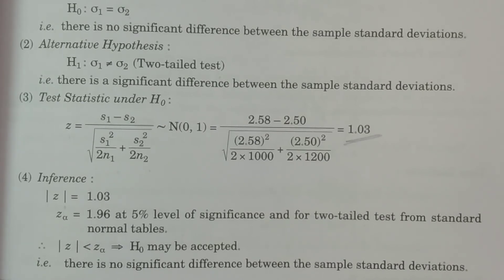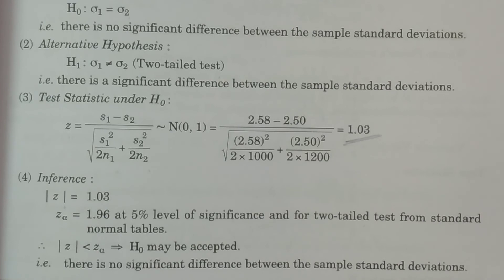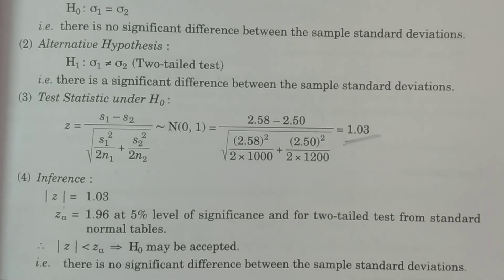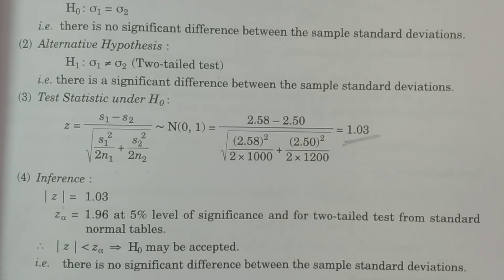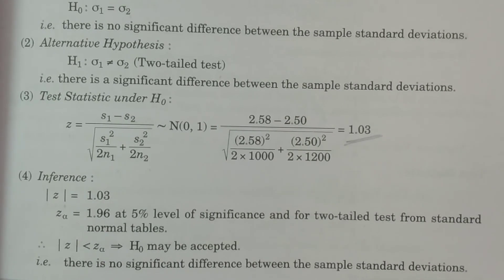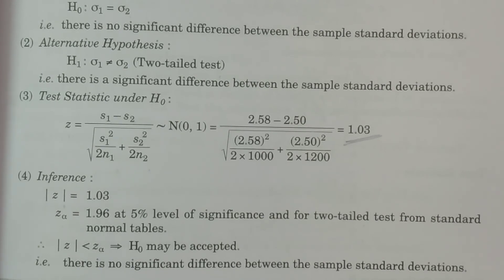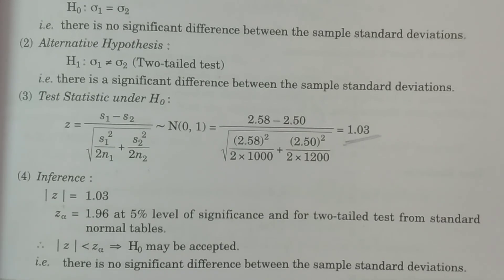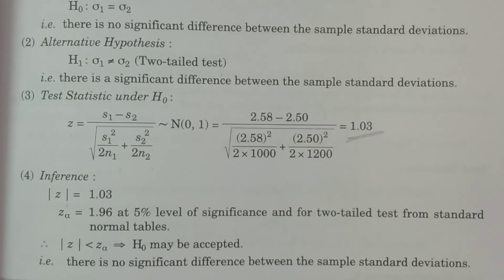These are the two different tests we had to conduct to determine the significance of differences between the means and standard deviations. Based on both measures — means and standard deviations — H0 is accepted in each case. Hope you understand. Thank you.